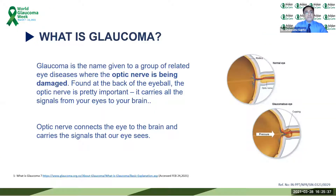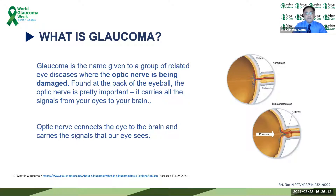What exactly is glaucoma? Glaucoma is the name given to a group of related eye diseases where the optic nerve — the nerve responsible for sight, located at the back of the eye — is being damaged. The optic nerve is very important as it carries all the signals from the eye to the brain. Think of the eye as a camera and the brain as a computer: the optic nerve carries the signal from the eye to the brain, and that is where glaucoma causes its damage.